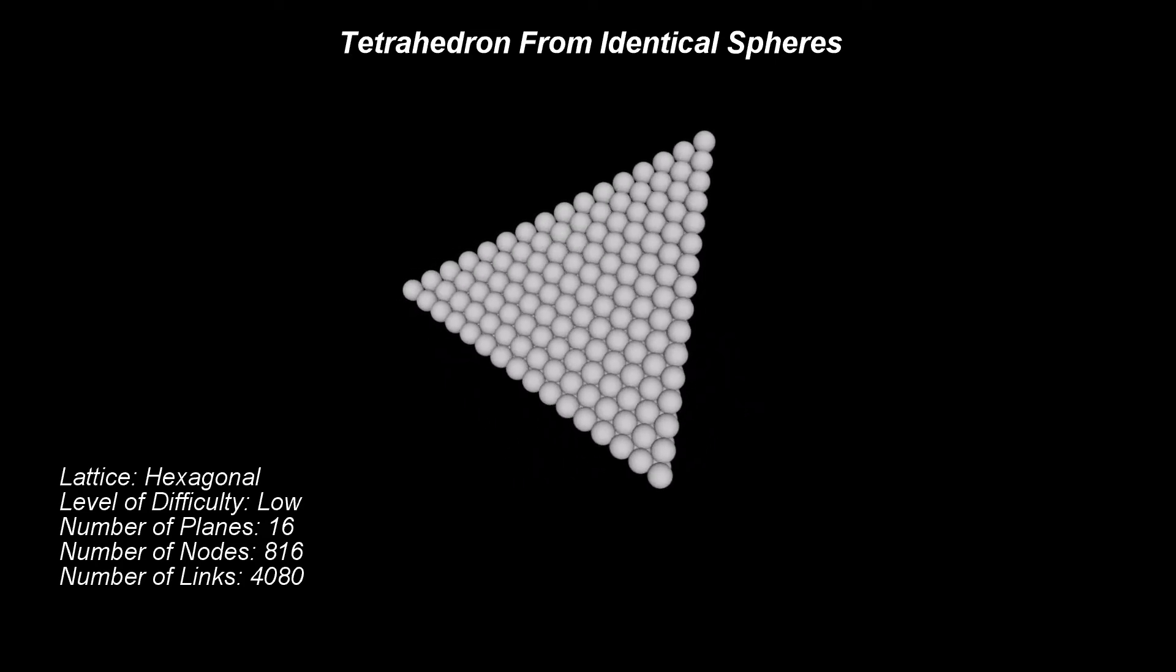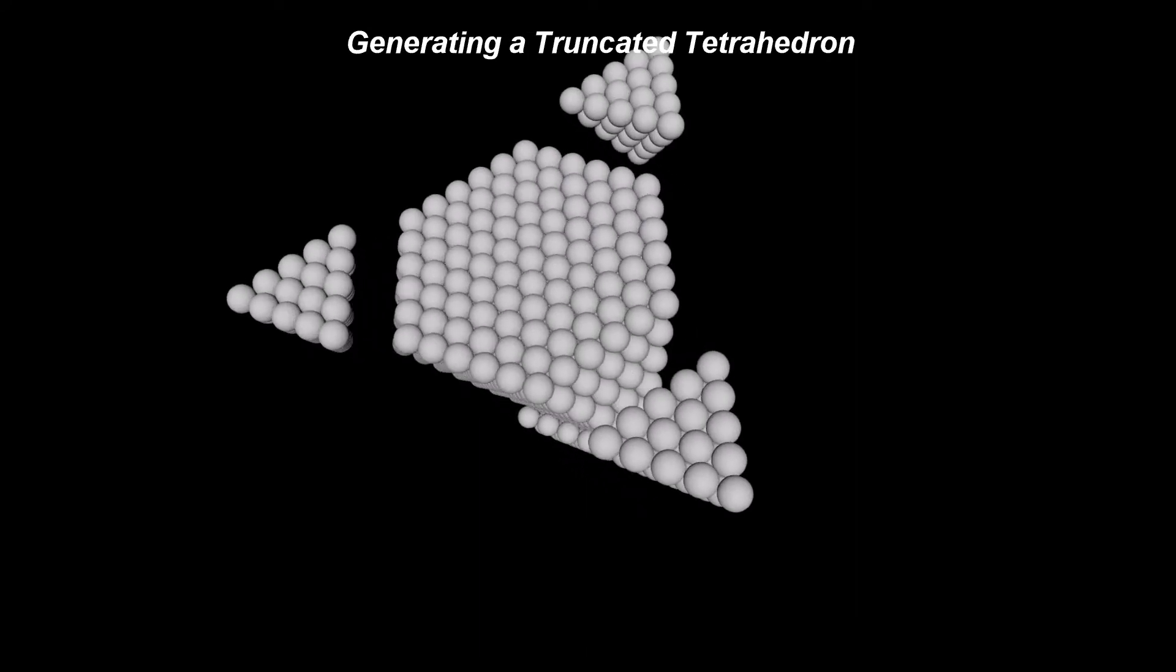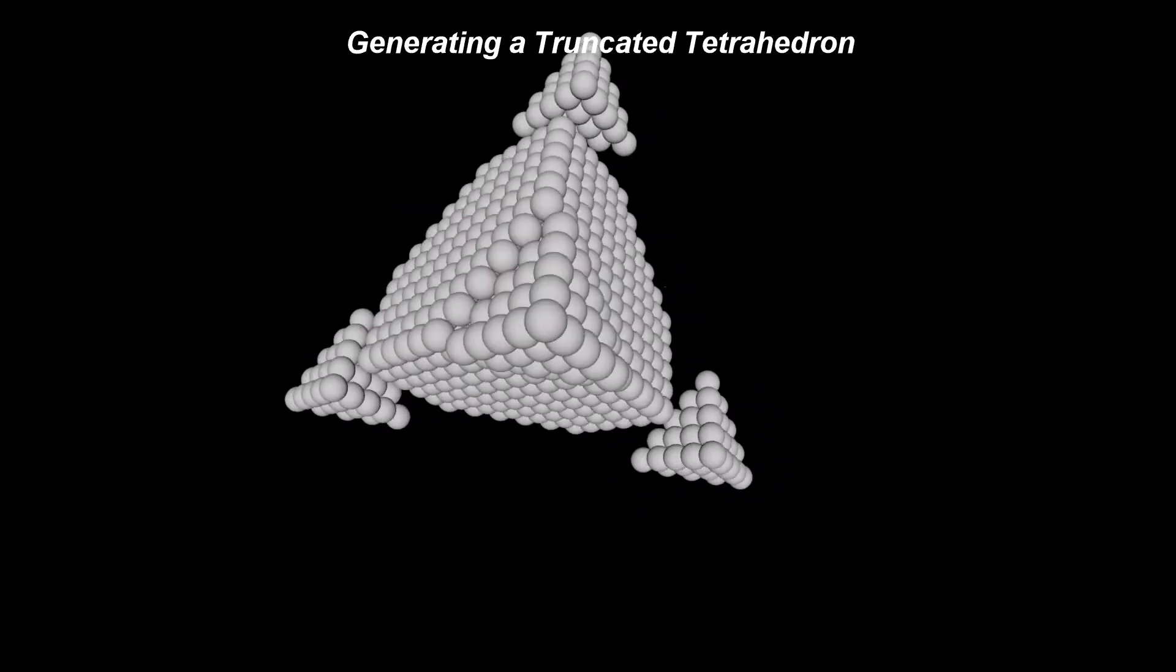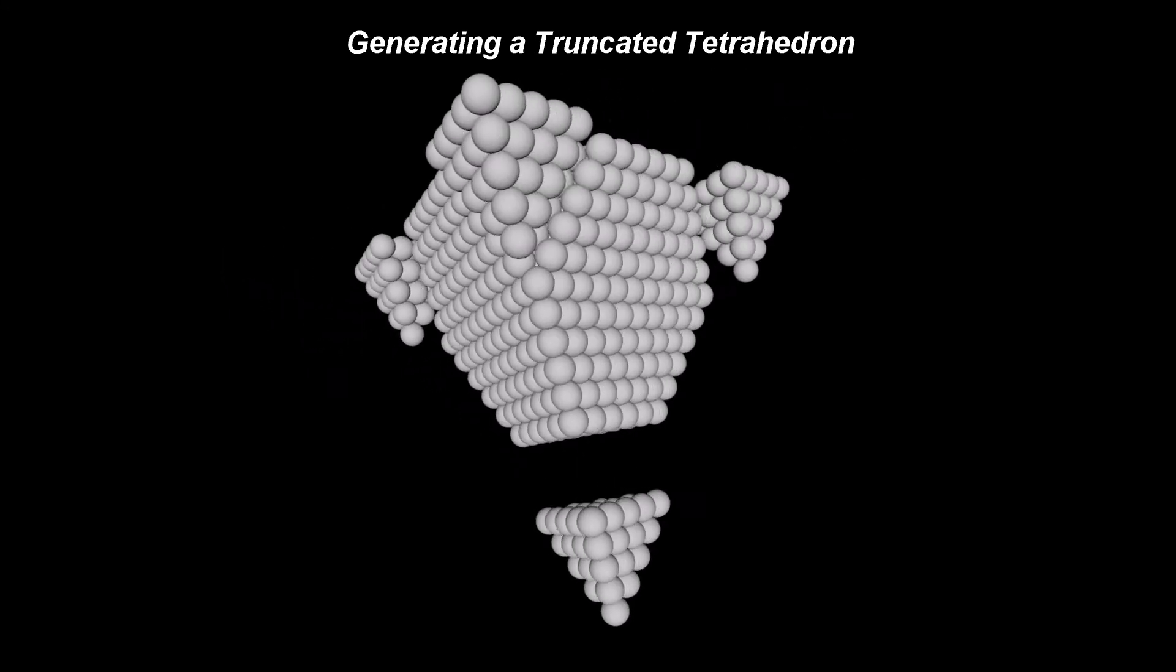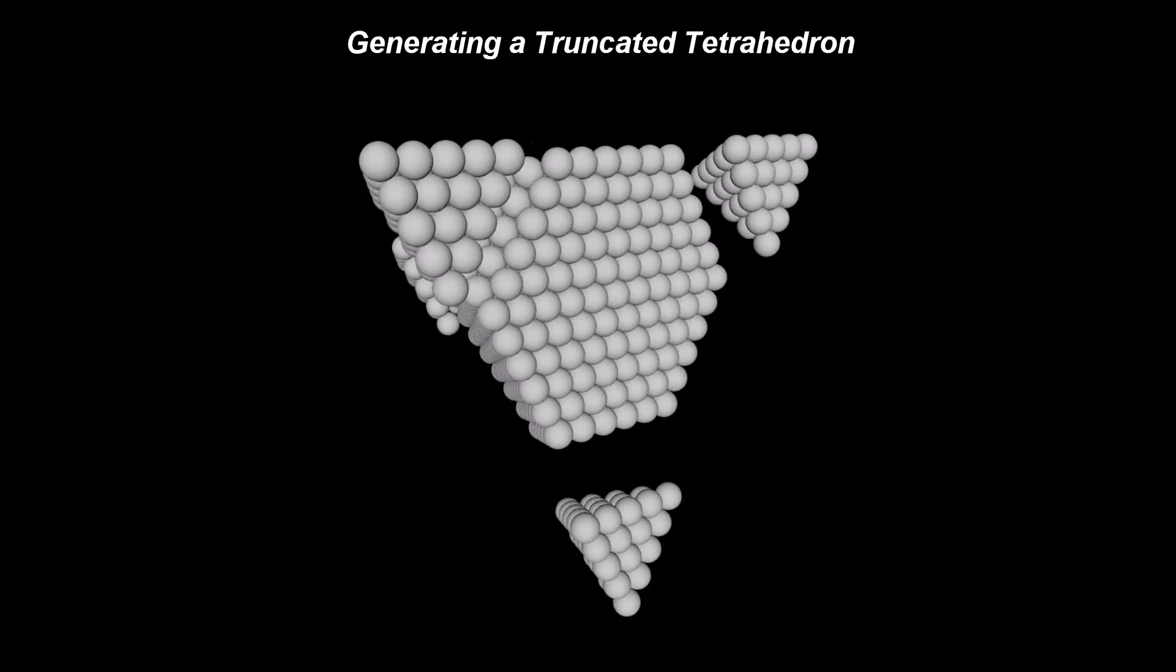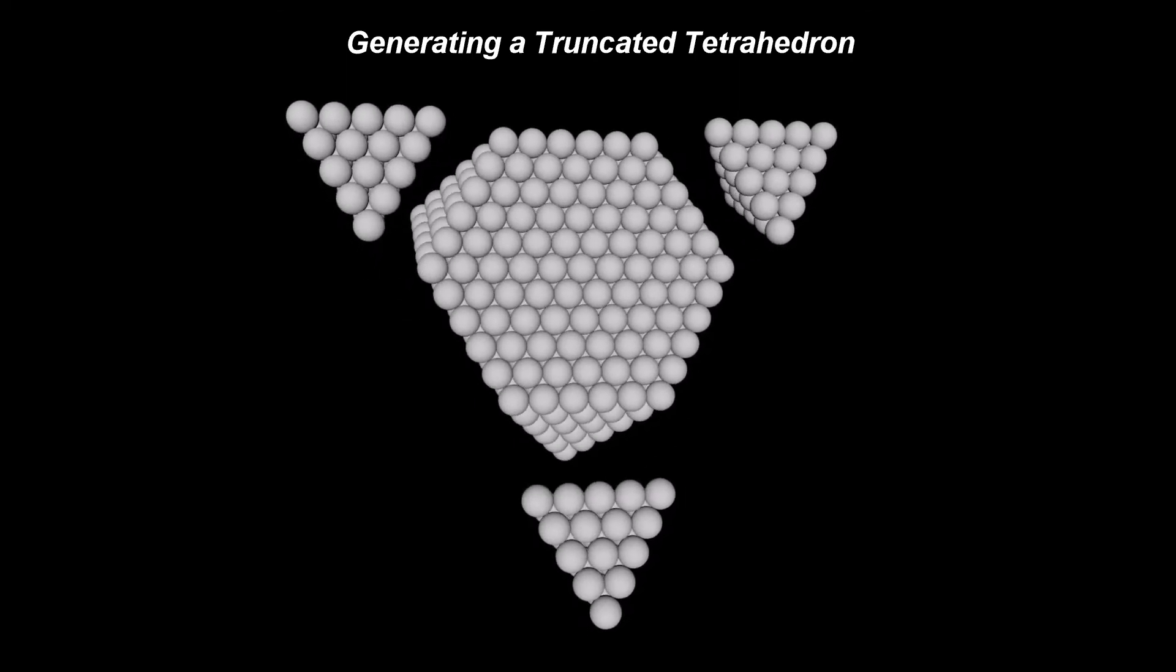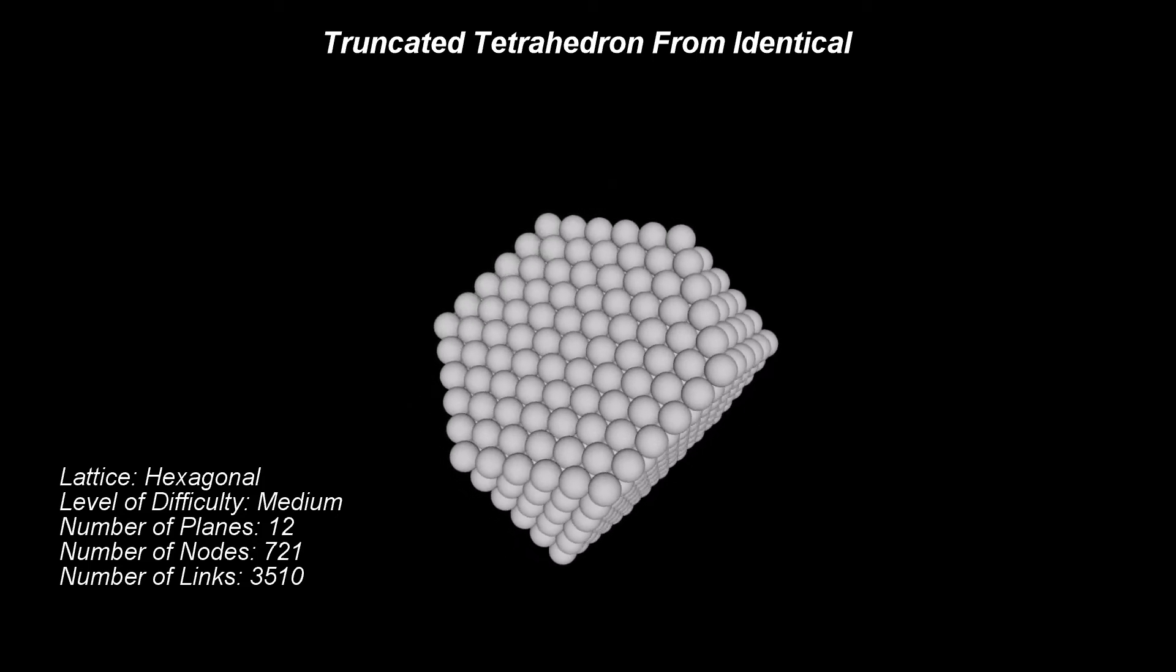By doing these, the four vertices of the tetrahedron transform into four triangular faces, and the triangular faces of the initial solid become hexagonal faces. When starting from a tetrahedron assembled from identical spheres, one can generate a truncated tetrahedron by removing spheres forming the vertices of the platonic solid.